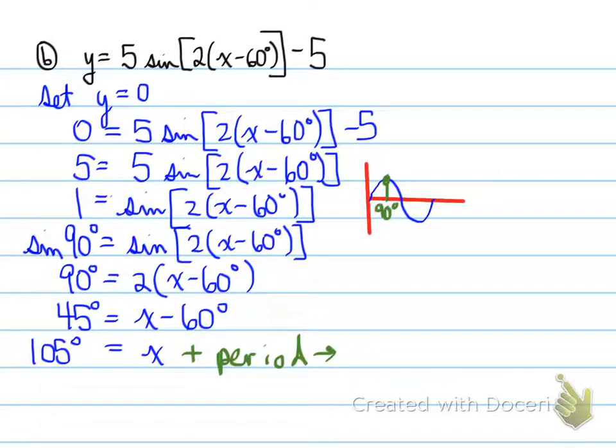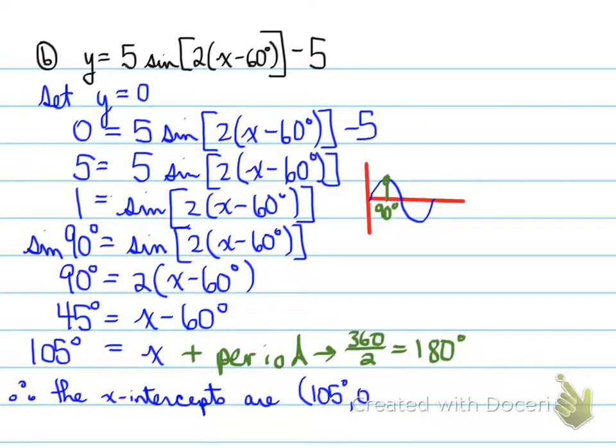Is there another time that sine is equal to 1? And the answer is no, there's only 1. So what we'll do now is add the period. What is the period of this function? It is 360 divided by the k value, which is 2. So the period repeats itself every 180 degrees. So we can do our therefore statement. Therefore, the x-intercepts are: (105°, 0), (285°, 0), (465°, 0). You add 180 each time. 285 plus 180 gives us 465 degrees. If we had plugged in 390, we definitely would not have gotten that value, which would have been a mistake.